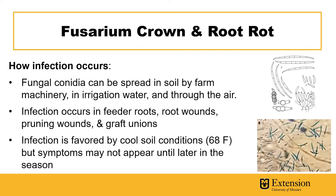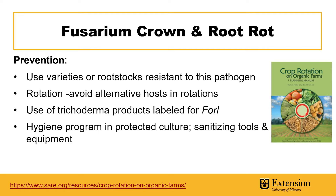Infection can occur in feeder roots as well as root wounds and pruning wounds, and also graft unions of grafted tomato plants. Infection generally occurs earlier in the season when soil temperatures are around 68 degrees Fahrenheit, but you might not notice symptoms of this disease until later in the growing season.